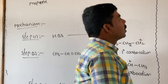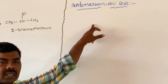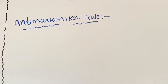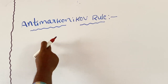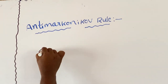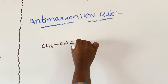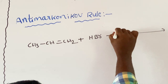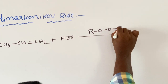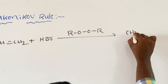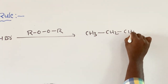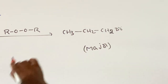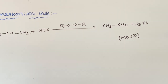Next, Anti-Markovnikov's Rule: an unsymmetrical alkene reacting with an unsymmetrical reagent in the presence of peroxide gives 1-bromopropane as the major product — this is the Anti-Markovnikov product. CH3-CH2 + HBr in the presence of peroxide gives 1-bromopropane as the major product. This reaction mechanism is involved in 4 steps.